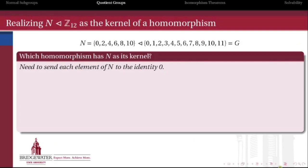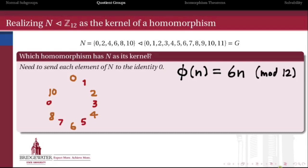So as a quick example, here's this even subgroup of Z mod 12 again. Which homomorphism out of Z mod 12 has this as its kernel? Well, what we need to do is send each of these six elements to the identity, the identity in this group being 0. Well, one way to do that is just by multiplying each one of them by 6.